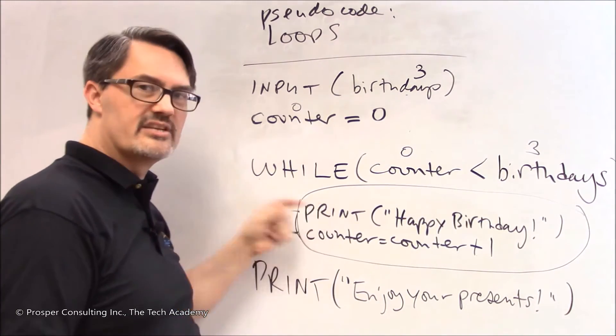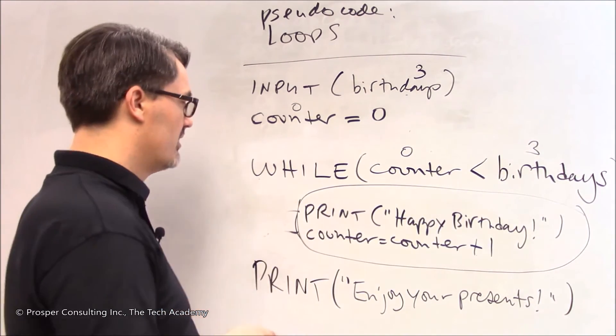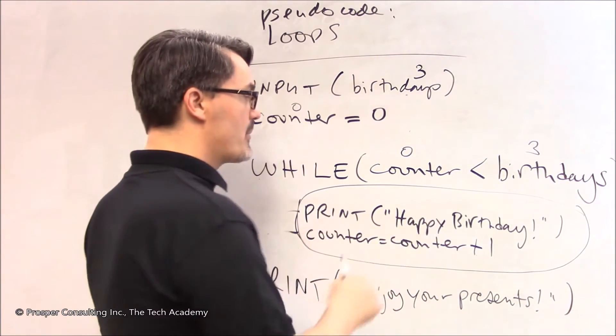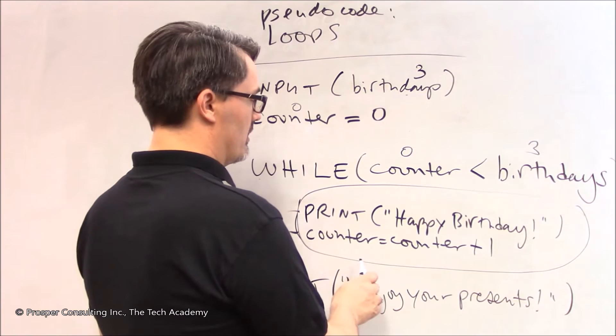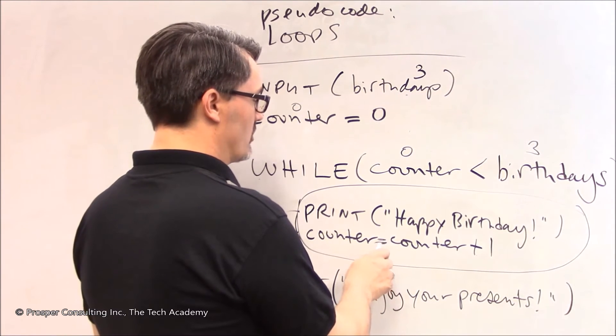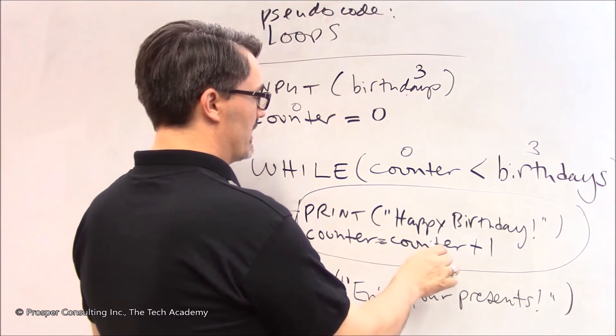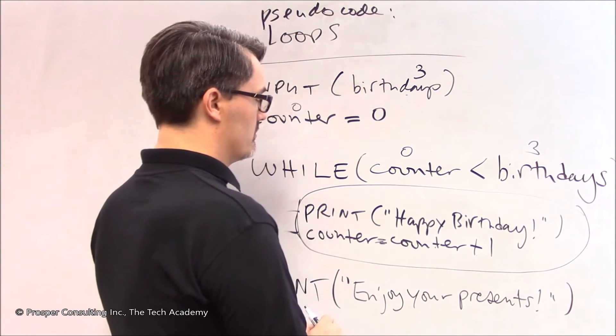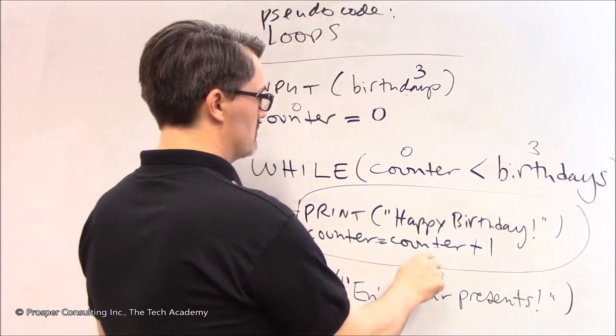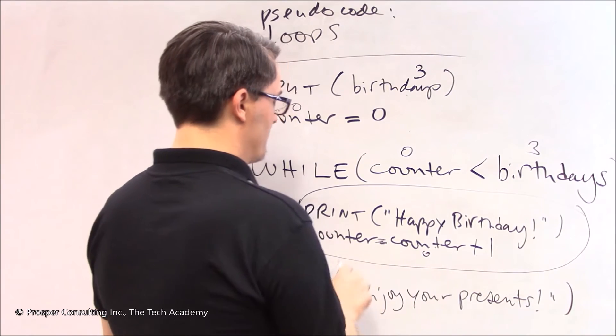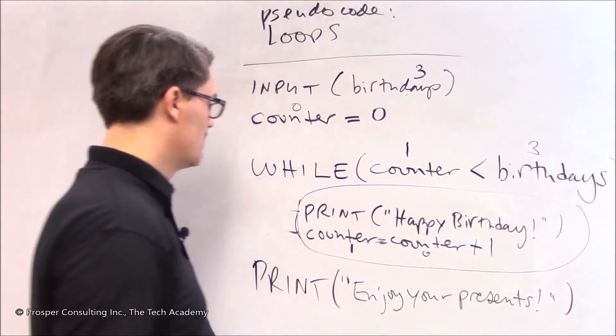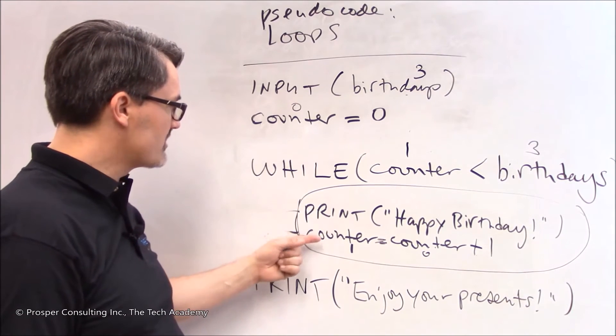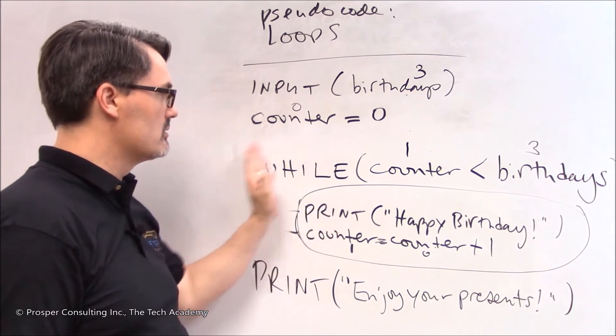So it does these two instructions. And look at this really closely. The first one is pretty simple. It's going to print happy birthday on the screen. But then it's going to take the value of counter and give it a new value. It's going to make it equal to its current value plus one. If its current value is zero and we add one that means it's now equal to one.